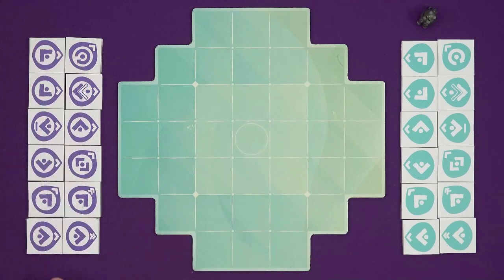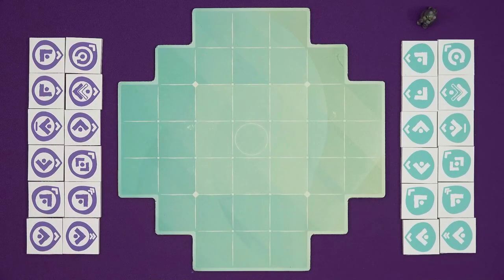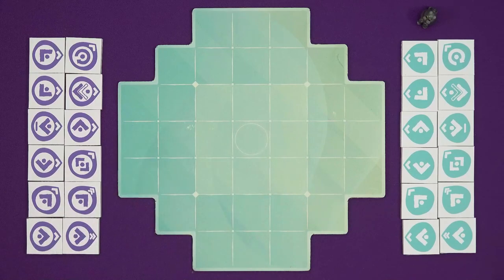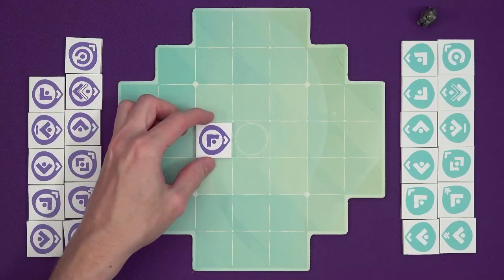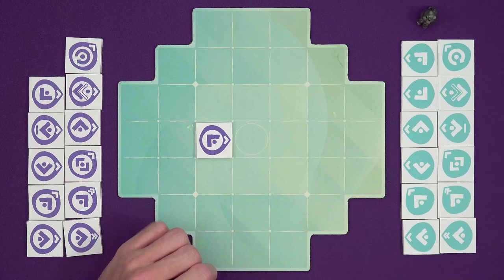Now on your turn you will place an idea tile in this three by three square in the middle of the board. Only restriction for the very first tile can't go right in the middle, so I'm going to place an idea, this is the conversation starter, I'm going to pop it down there. Now it doesn't do anything else because it's the only tile on the board.